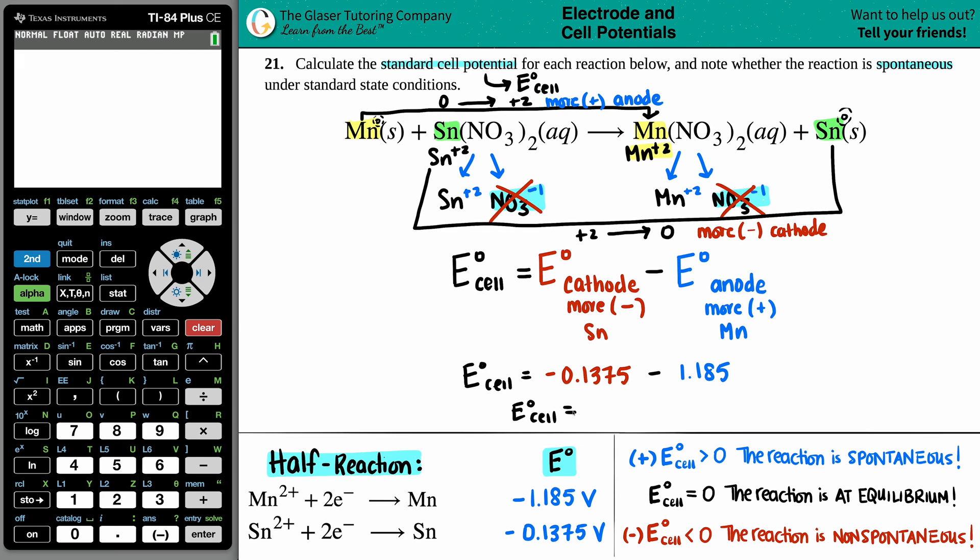It's all good, right? Let's plug this in. Negative 0.1375 minus, and that value, did anybody catch that? That value is a negative. Just triple checking. Good and good.